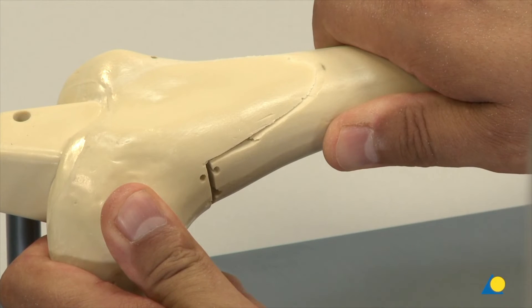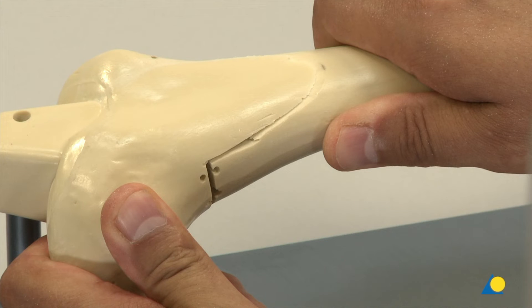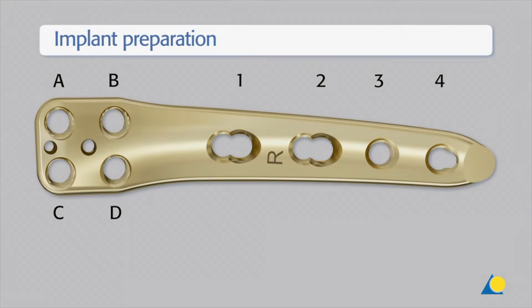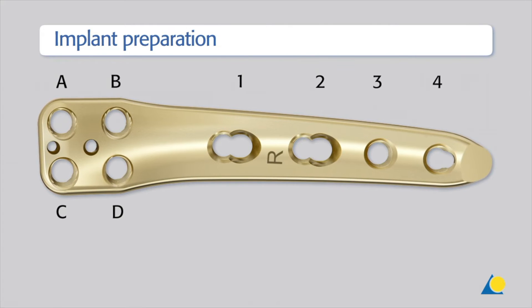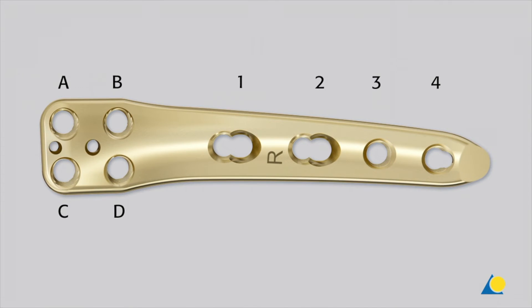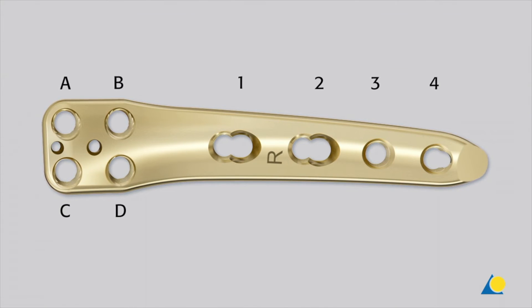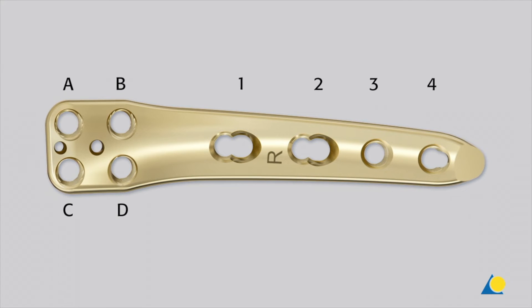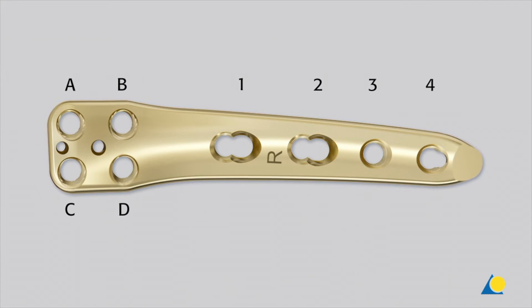The osteotomy gap can be held closed either by manual compression or with two crossed K-wires positioned so as not to interfere with the intended position of the plate. To allow uniform orientation, the four distal plate holes are labeled A through D, and the four proximal combination holes are labeled 1 through 4, from distal to proximal.